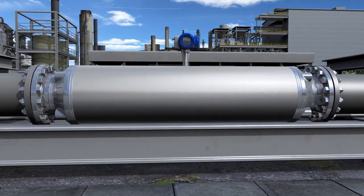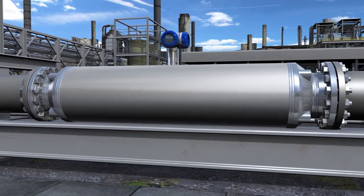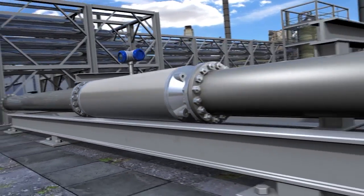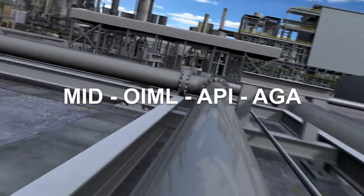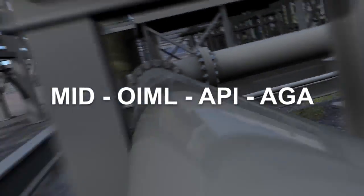The OptiMass 2400 S400 is the meter for fiscal pipeline transfer, leak detection, ship loading, bunkering, and allocation metering in the oil and gas market. It's certified for custody transfer application according to MID and OIML and complies with API and AGA guidelines.